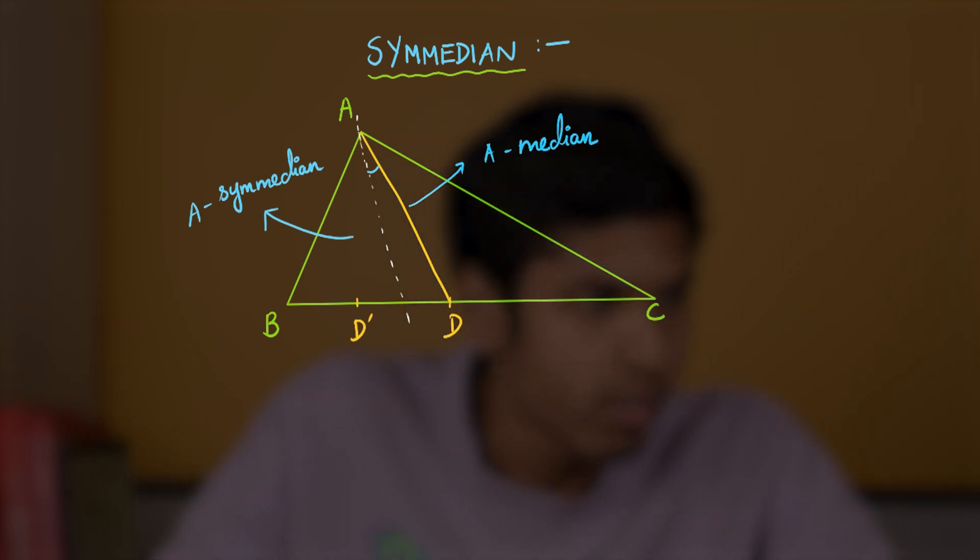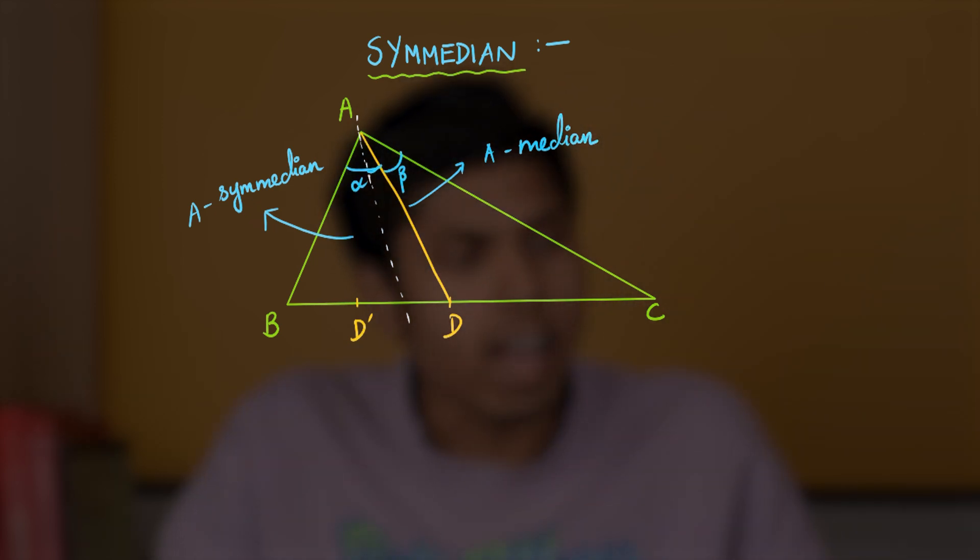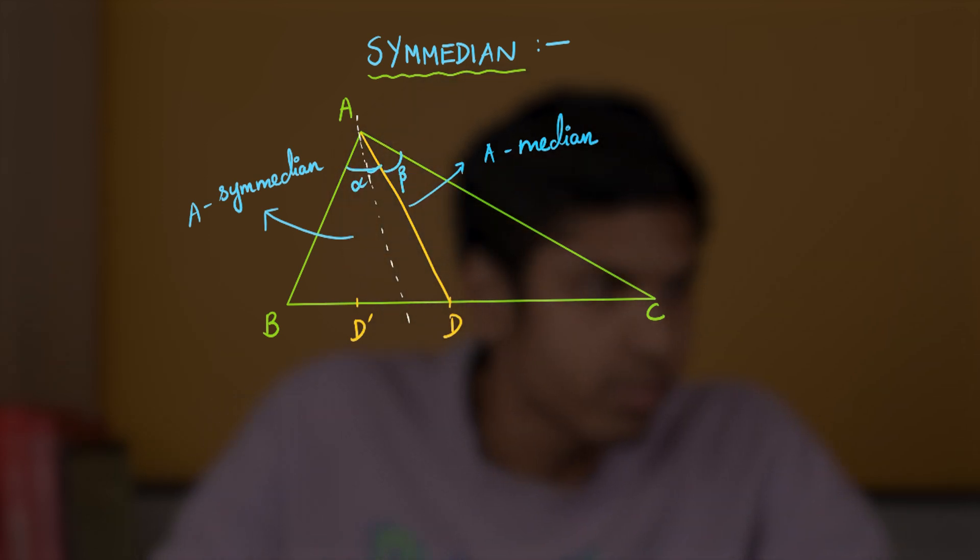First, observe that the angle made by the median with the sides, say alpha and beta, will be exactly the opposite of the angle made by C-median with the sides. That is, the C-median AD′ makes beta with the side AB and alpha with the side AC.